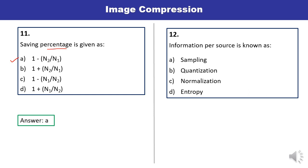Question 12: Information per source is known as — sampling, quantization, normalization, or entropy? Information per source is known as entropy. So D is the correct answer.